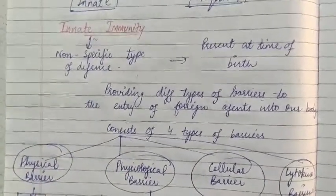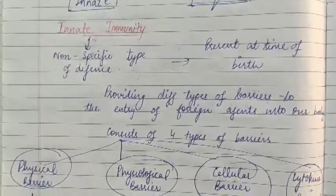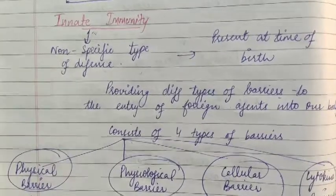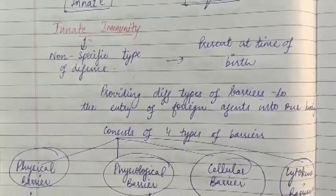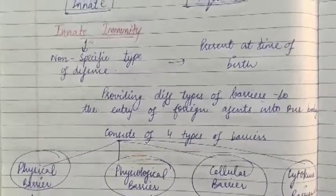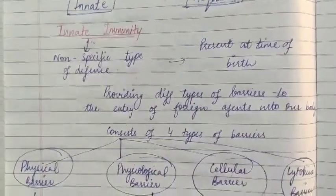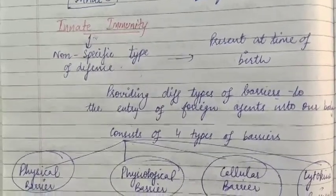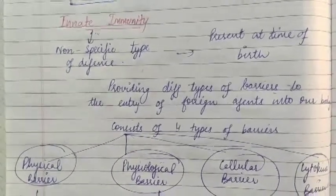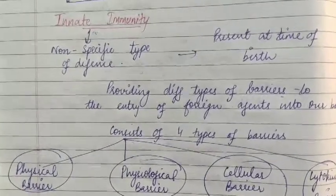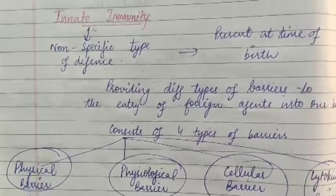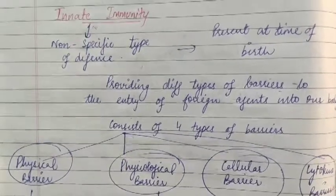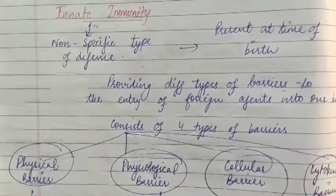Innate immunity is a non-specific type of defense. It means we don't need to protect against a particular bacteria or particular virus — it is non-specific. This is present in our body at the time of birth, and it helps us protect our body by providing different types of barriers to the entry of foreign agents. It does not allow anyone to enter our body.